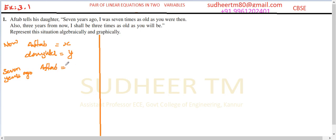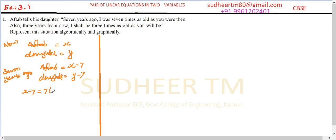Seven years ago: Aftab's present age is X, so seven years before he will be X minus 7. The daughter will be Y minus 7. The statement says: seven years ago I was seven times as old as you were, meaning age of Aftab seven years ago equals seven times age of daughter seven years ago.